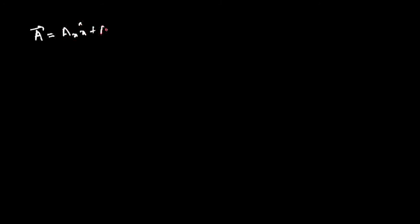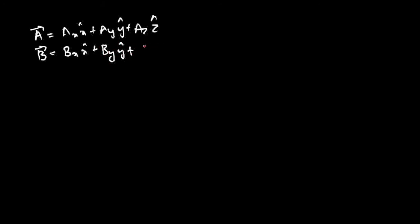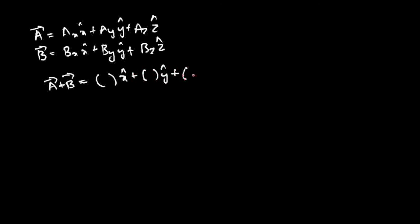Let's erase the board and start with vector algebra. Vector algebra deals with the addition and subtraction of vectors and also the scalar multiplication of vectors. Given a vector a_bar in the Cartesian coordinate system: a_bar = ax·x_cap + ay·y_cap + az·z_cap. We have constructed this vector and we know what ax, ay, az are, and also x_cap, y_cap, z_cap. Given one more vector b_bar = bx·x_cap + by·y_cap + bz·z_cap, what would be the expression for a_bar plus b_bar? This will be (ax + bx)·x_cap + (ay + by)·y_cap + (az + bz)·z_cap.